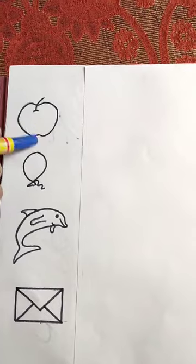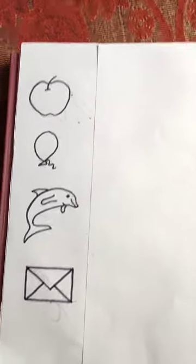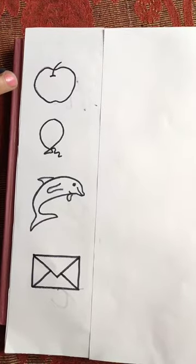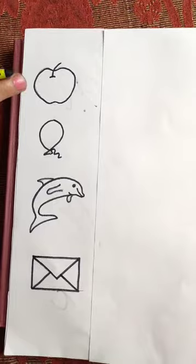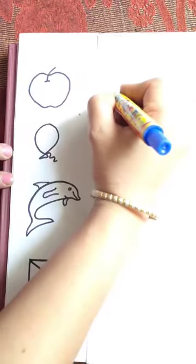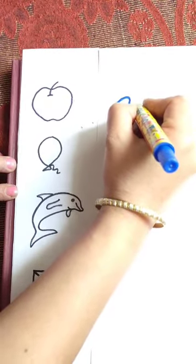This is the picture of apple. Apple. Apple. The beginning sound of apple is A. And A is the sound of A. So, how we will write A? Like this. A, A.